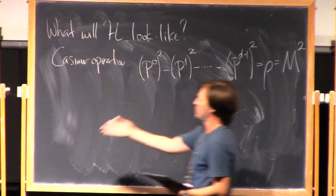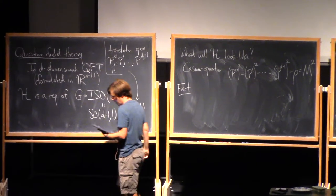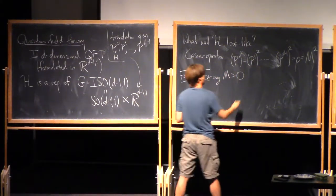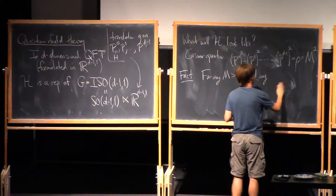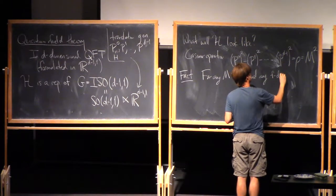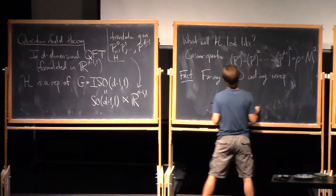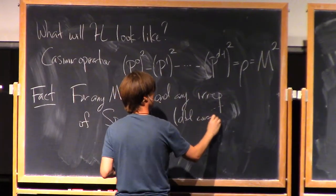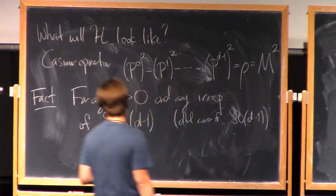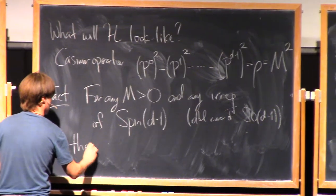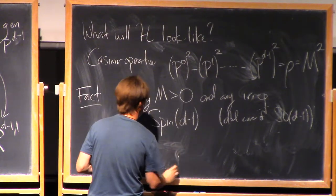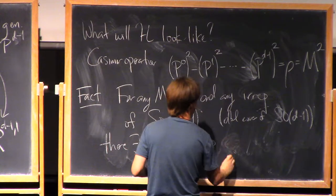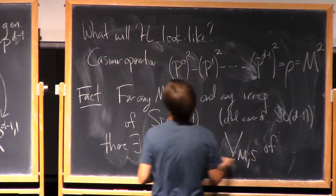Here's a fact about the representation theory of this group. For any constant M greater than zero, and any irreducible representation of the group Spin(d-1) — that's the double cover, the universal cover of SO(d-1) — there exists a unitary irreducible representation V_{M,S} of the group G.